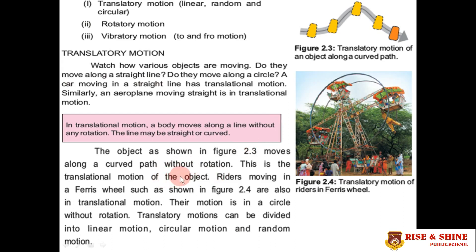Riders moving in a ferris wheel, as shown in figure 2.4, are also in translational motion. This rider, which you can see wearing yellow clothes, possesses translatory motion, while the ferris wheel itself rotates around its axis and thus possesses rotatory motion.